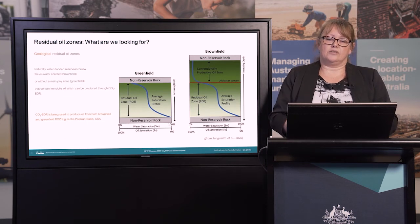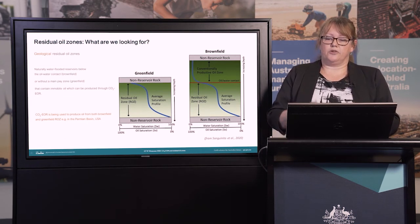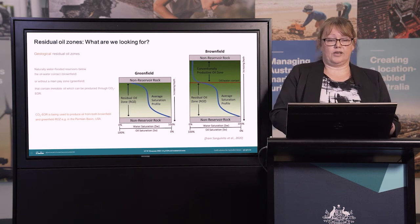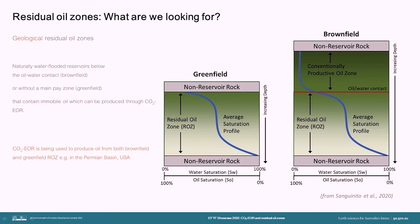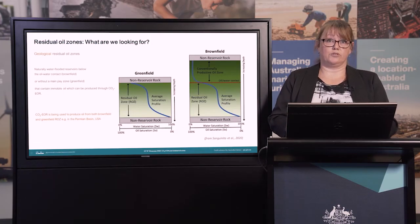This got us thinking about where else CO2 EOR could be used, particularly with a view to accelerating the deployment of CCS. We started looking into residual oil zones. Residual oil zones are naturally water-flooded reservoirs that contain some immobile oil that can be produced with CO2 EOR, and they can contain significant amounts of oil and also store very large volumes of CO2. These things occur beneath conventional oil fields in a brownfield scenario, and they can also occur without a main pay zone — that's the greenfield scenario. In the Permian Basin in the United States, commercial quantities of oil are actually being produced from both brownfields and greenfields residual oil zones using CO2 EOR.